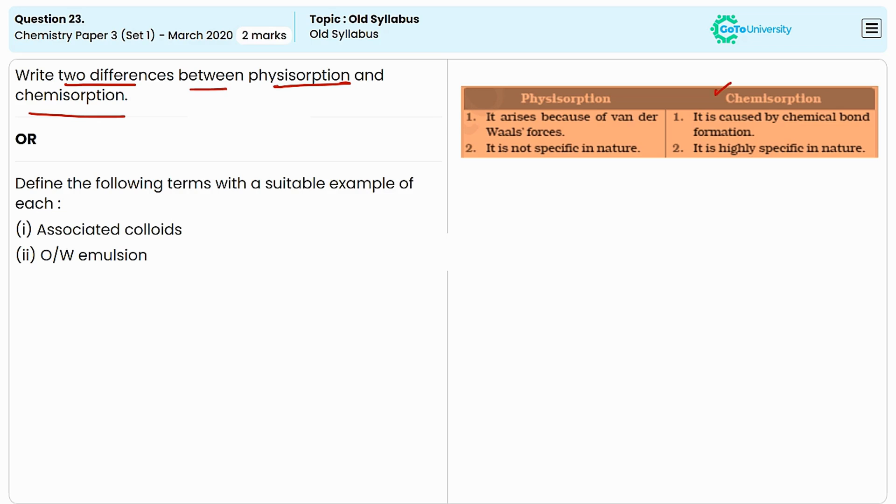Whereas in chemisorption, it involves stronger chemical bonds such as covalent or ionic bonds. The bonding is chemical, involving the formation of bonds between the adsorbate and the surface.